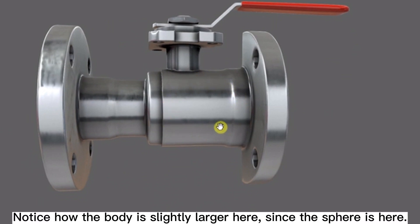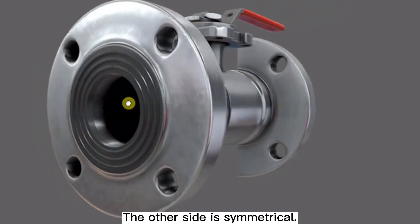Notice how the body is slightly larger here, since the sphere is here. The other side is symmetrical.